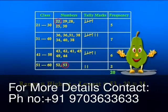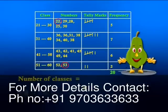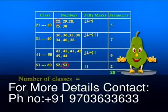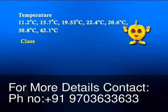We can easily calculate the number of classes we should create by using the range of the data. The formula is the range of the data divided by the length of the class interval — in this case that is 9. The length of the class interval is calculated as the difference between the upper and the lower limits of the classes. In a frequency table, we have classes such as 21 to 30 and 31 to 40, etc.